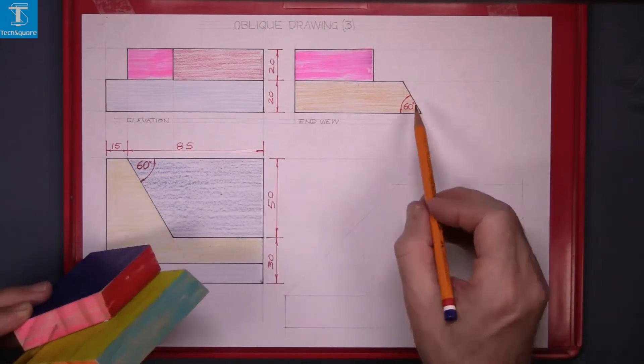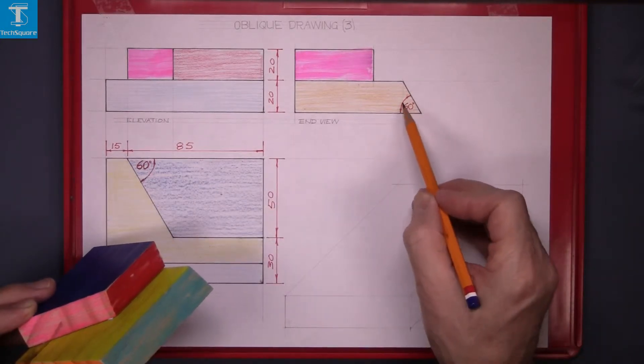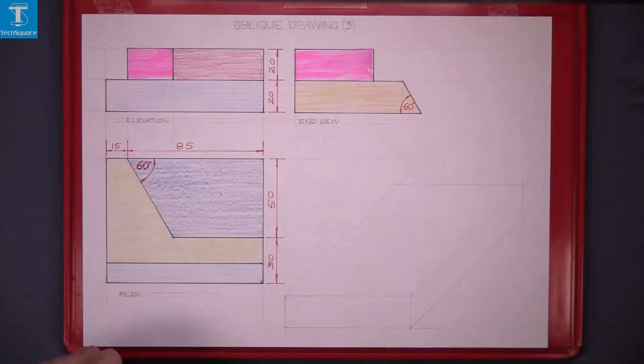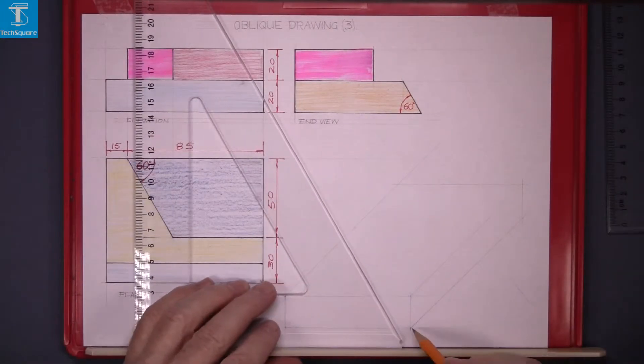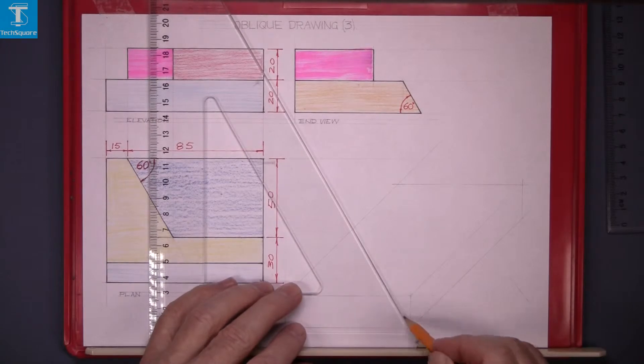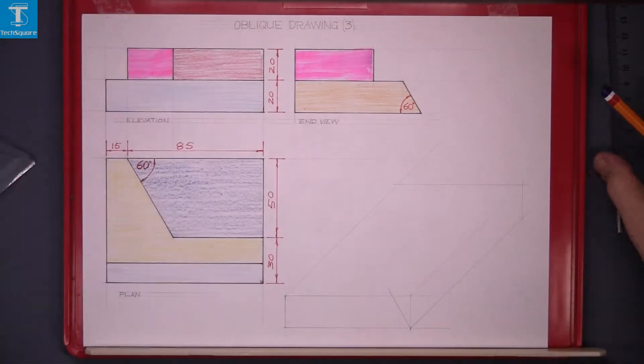This front surface is cut at an angle of 60 degrees so because it's sitting square to us we can actually use the set square at 60 degrees and draw that angle there.